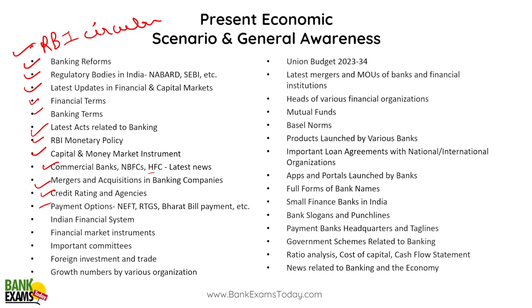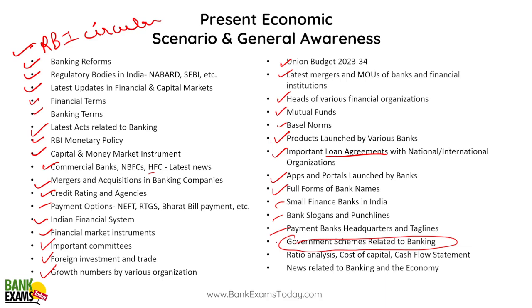Current affairs topics include things like UPI when it's in the news, the Indian financial system, financial market instruments, important committees, foreign investment and trade, growth numbers by various organizations, the union budget, latest mergers and MOUs, heads of various financial organizations, mutual funds, Basel norms, products launched by various banks, important loan agreements, apps and portals launched by banks, full forms of various banks, small finance banks, bank slogans, payment banks, government schemes, and banking and financial industry news. Six months of financial awareness topics are very important to cover.